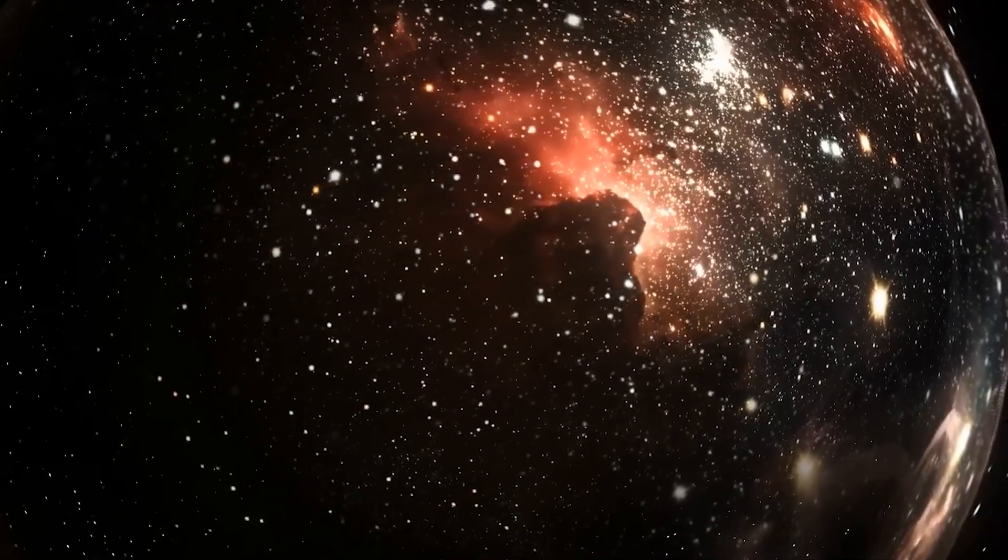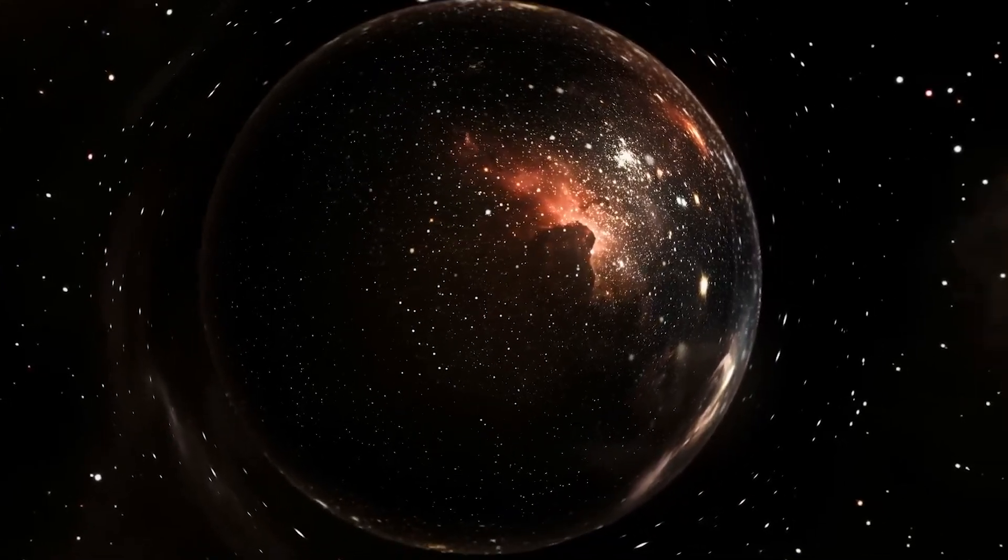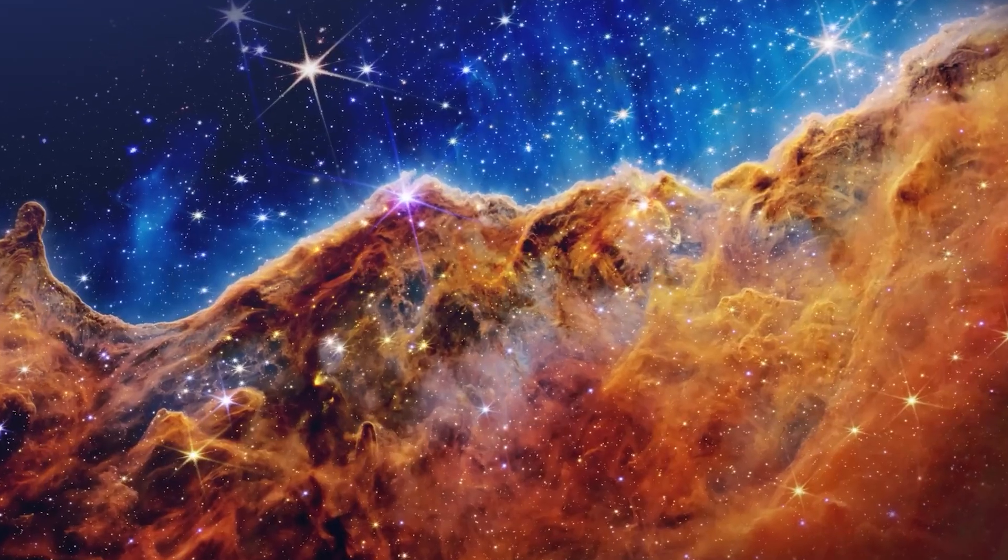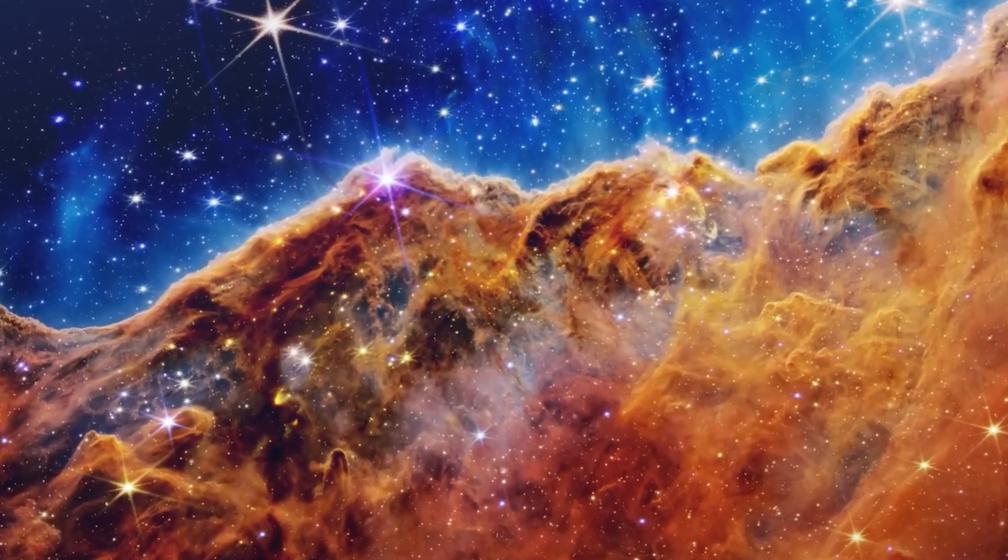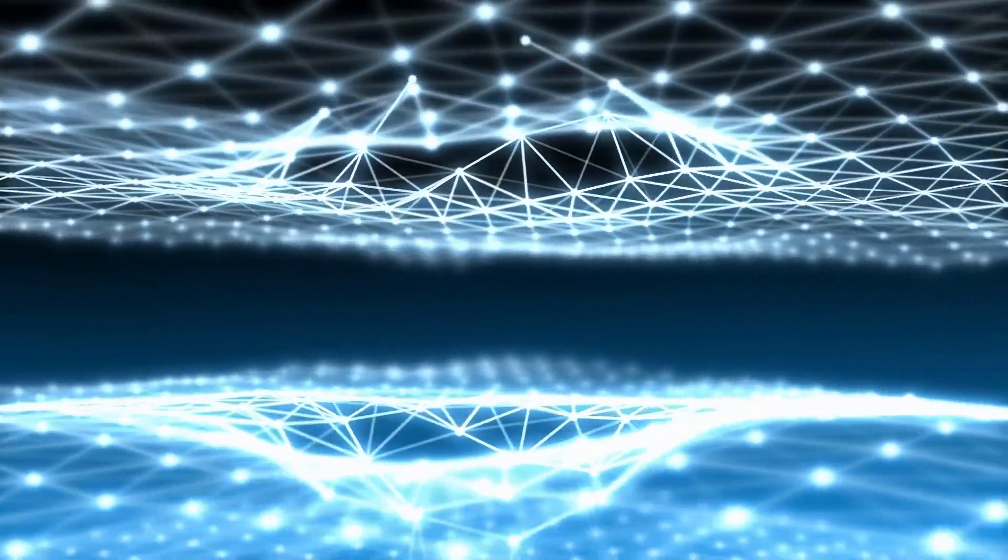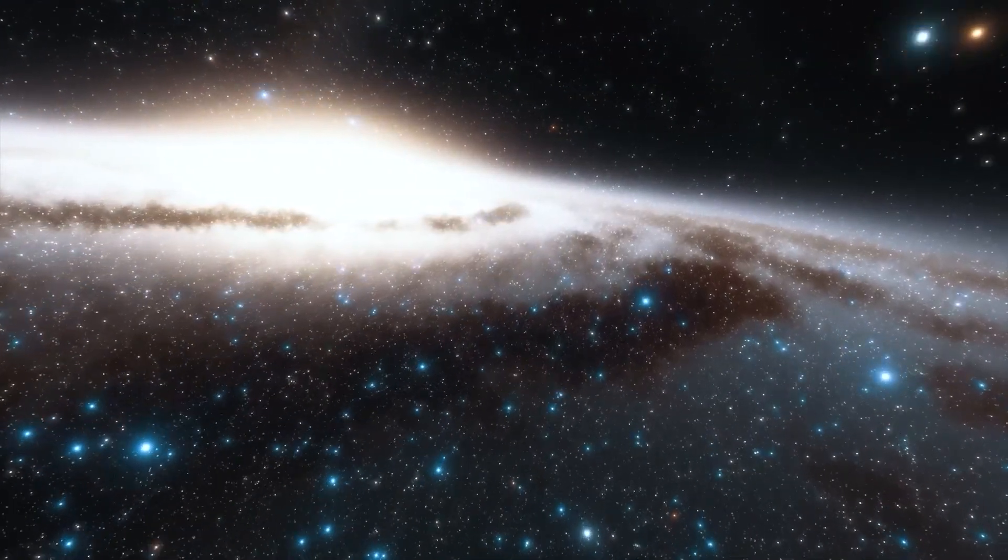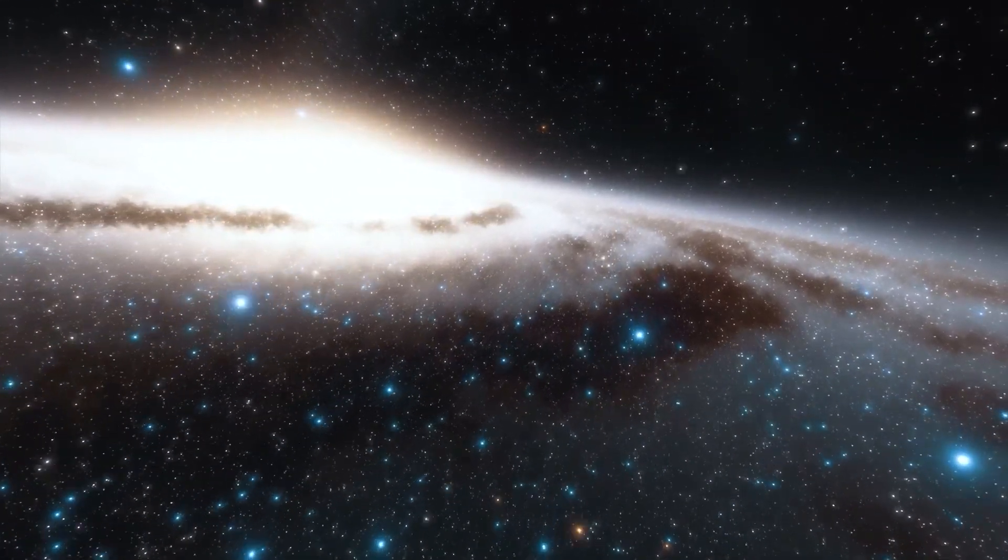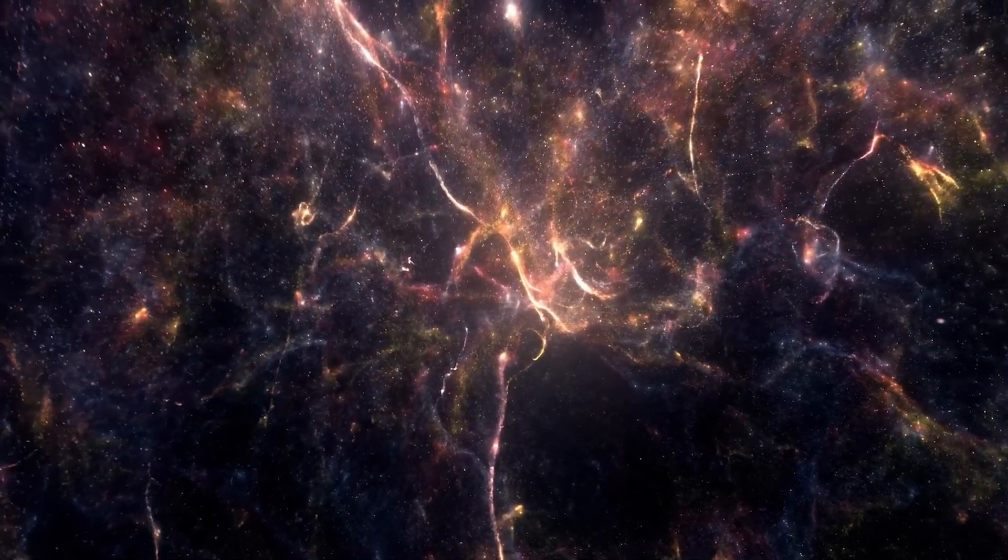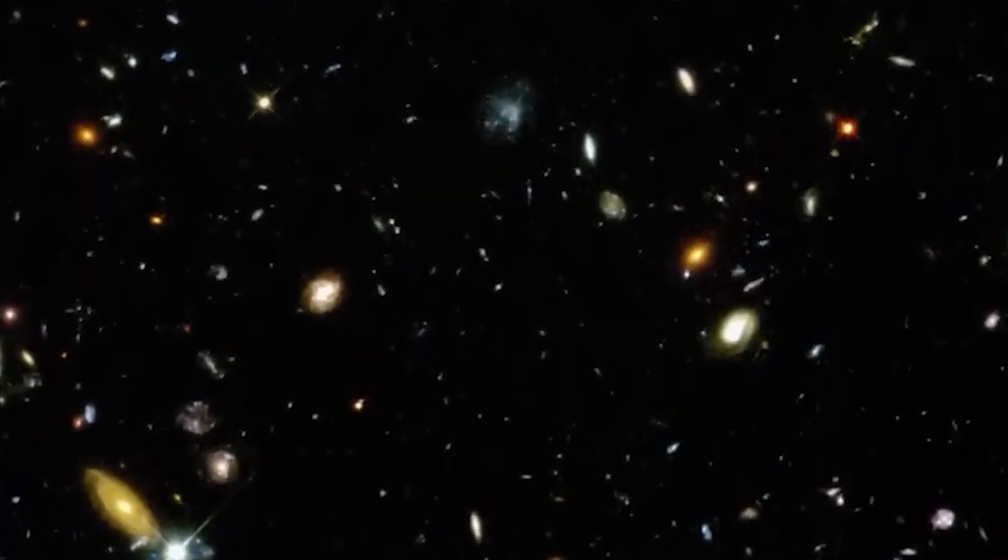Then the universe started blowing up rapidly. Imagine a subatomic particle inflating to the size of an orange, and then quickly to the size of a galaxy. This exponential growth made some points in the universe move faster than light. It might look like some points in our universe are moving faster than light, even though they seem to be breaking the universe's speed limit, they're not. Instead, new space is being created between them. It's not that they're moving fast, it's that the space between them is growing.